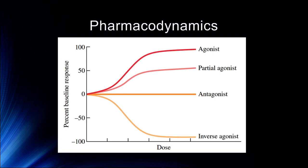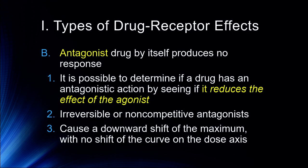To give you an idea: we might have an agonist, which will increase the response of a receptor; a partial agonist, which will somewhat increase the response; an antagonist that will block it; and an inverse agonist, which causes the exact opposite effect expected of a particular receptor. An antagonist drug by itself might produce no response. You can determine if a drug has an antagonistic action by seeing if it reduces the effect of an agonist.